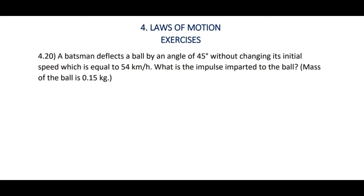Hello students. In this video we are going to discuss problems 4.20 and 4.21 from Laws of Motion. A batsman deflects a ball by an angle of 45 degrees without changing its initial speed, which is equal to 54 kilometers per hour. What is the impulse imparted to the ball? The mass of the ball is 0.15 kilogram.